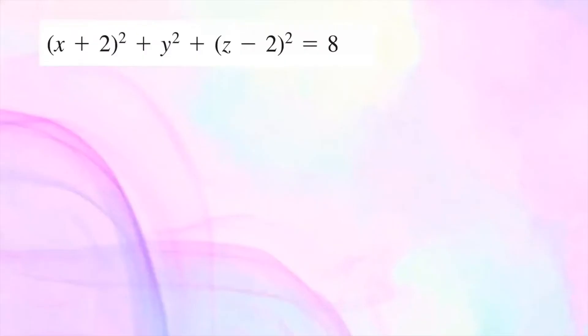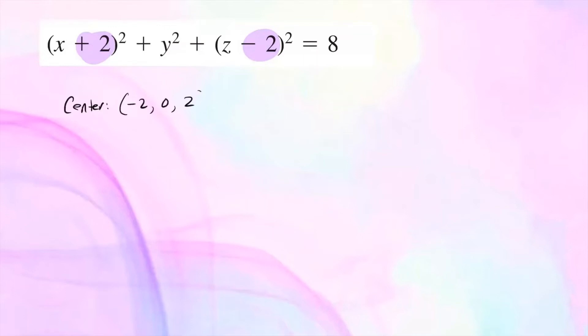Let's take a look at this next one. This is also in standard form — x₀ is negative 2 (written as x plus 2 squared), y₀ is 0 since there's no linear y term (you can write y minus 0 squared), and z₀ is 2. So the center for this particular sphere is going to be (−2, 0, 2), and the radius is √8, which simplifies to 2√2.